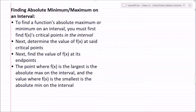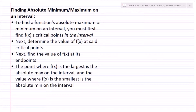Now let's talk about finding absolute min and max on an interval. To find a function's absolute max or min on an interval, first find the critical points within the interval — we don't care about critical points outside the interval. Next, determine the value of f of x at those critical points. Note: plug into the function, not the derivative — a common mistake is to plug into the derivative and get zero.